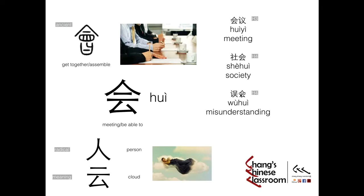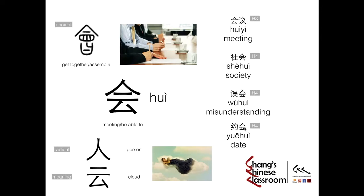Next: Wu Hui. Hui here probably means to meet — to meet a person, to communicate. And Wu means mistakes. So this communication mistake would be misunderstanding. Last: Yue Hui — Yue means designed or scheduled, and Hui means meeting, so a pre-scheduled meeting. And we say it as 'date' in Chinese.